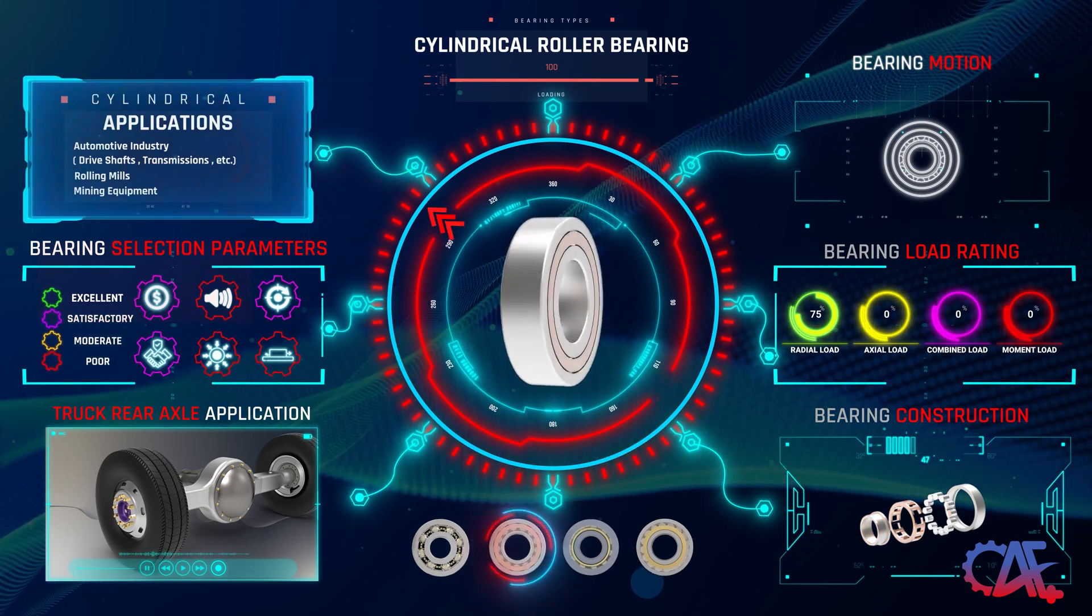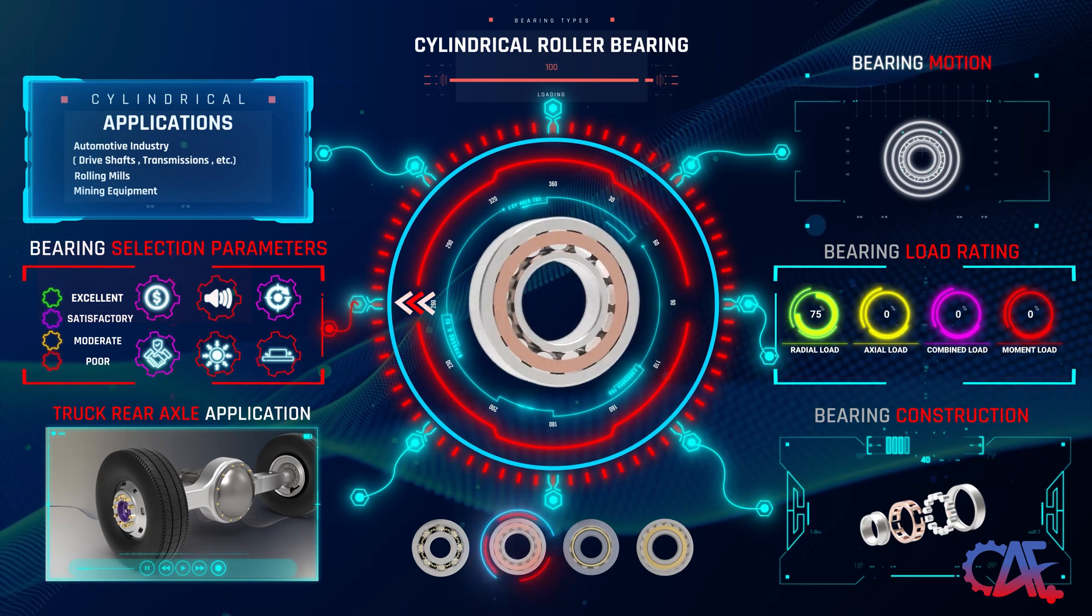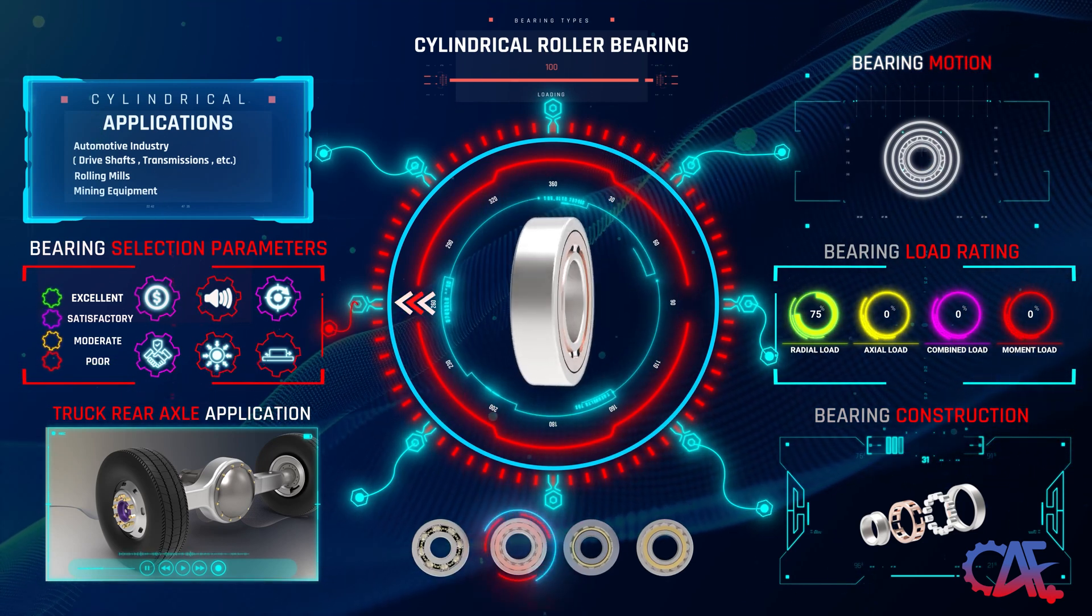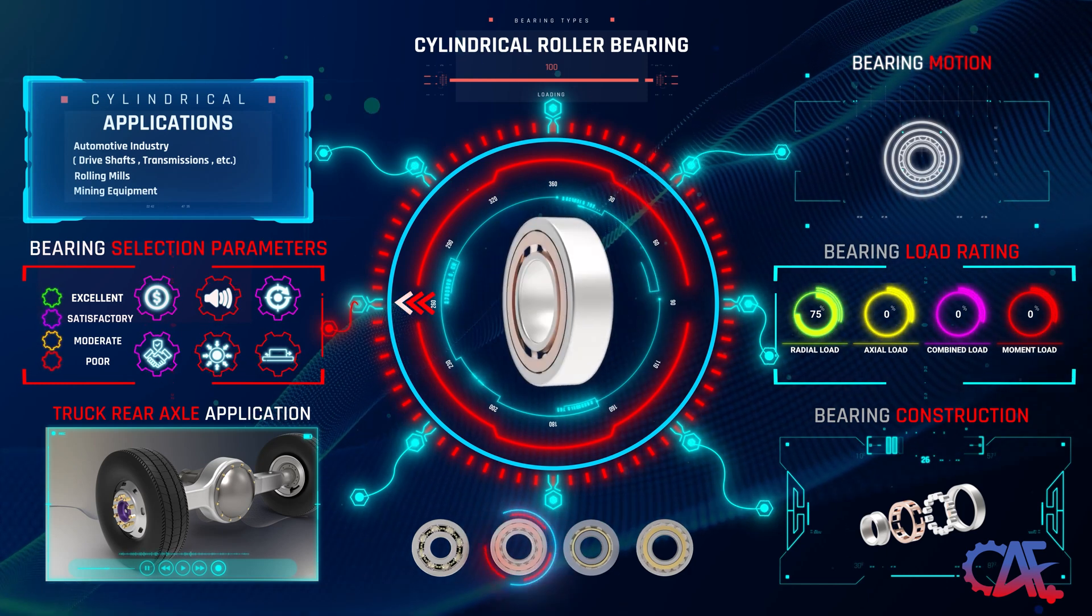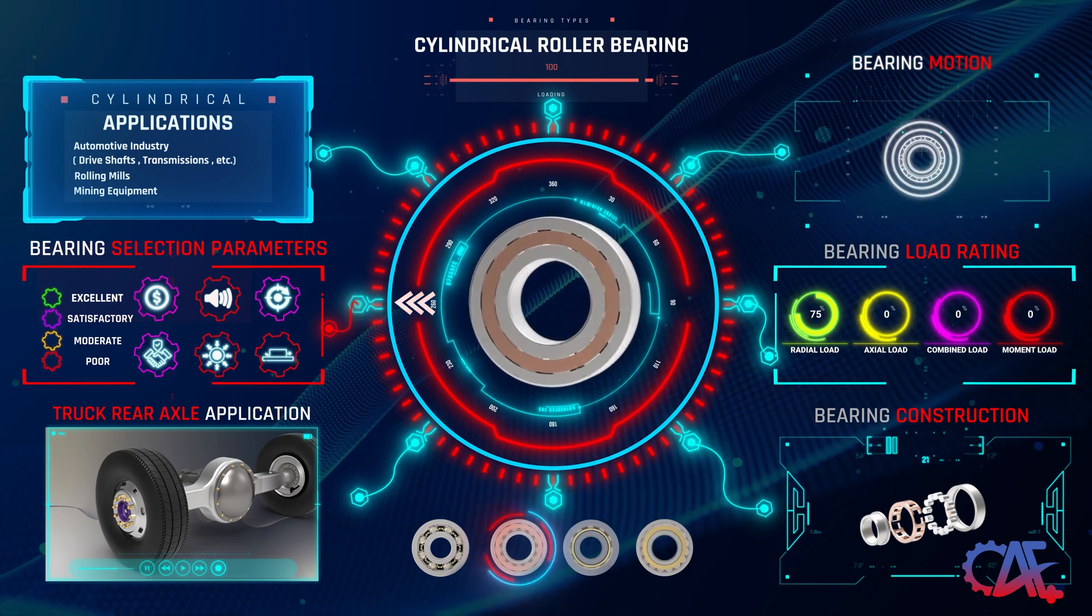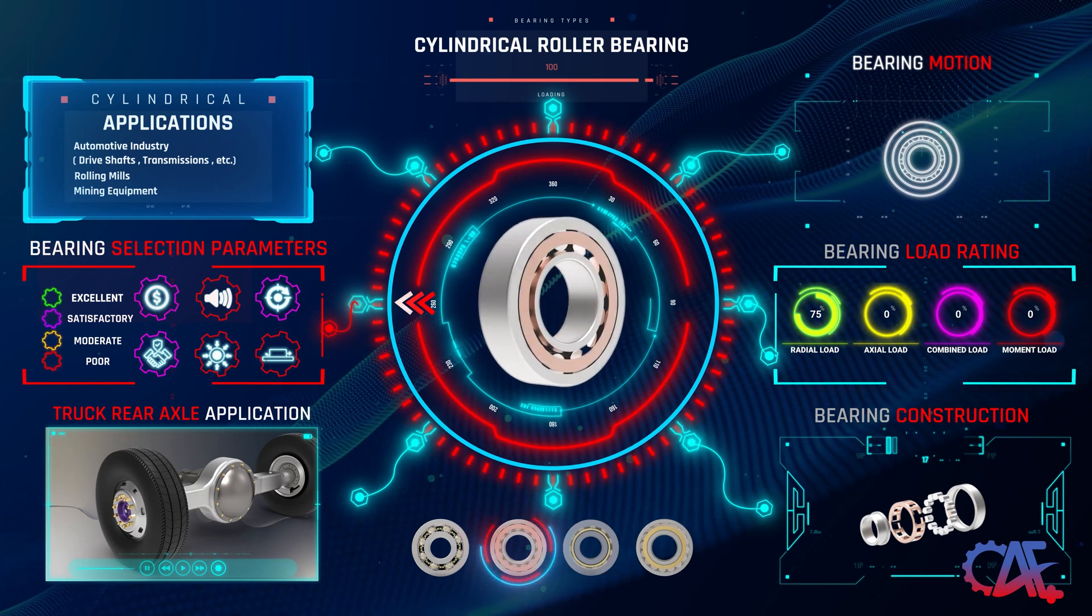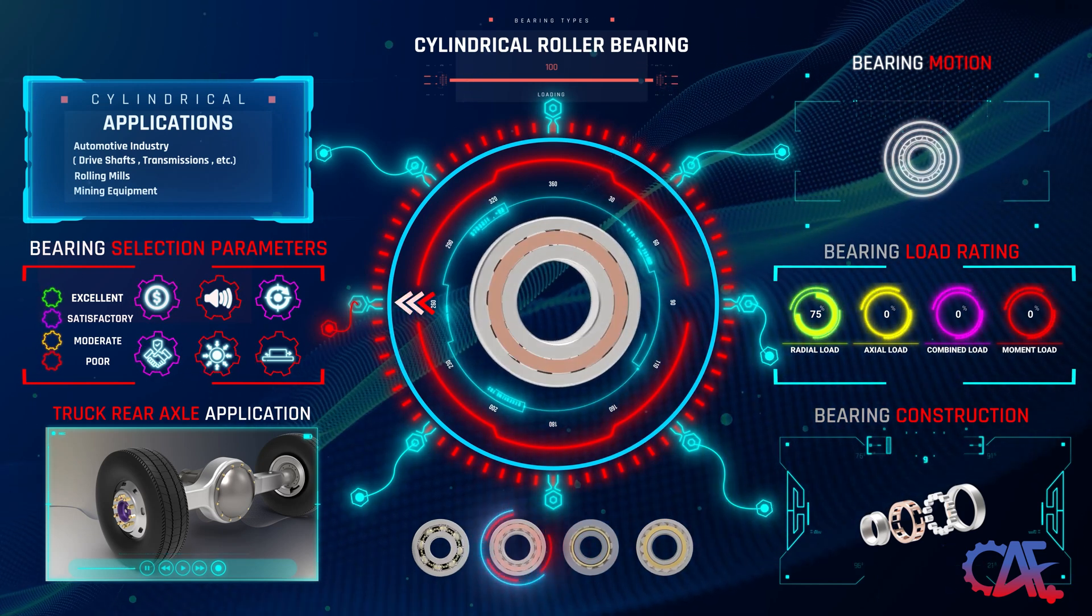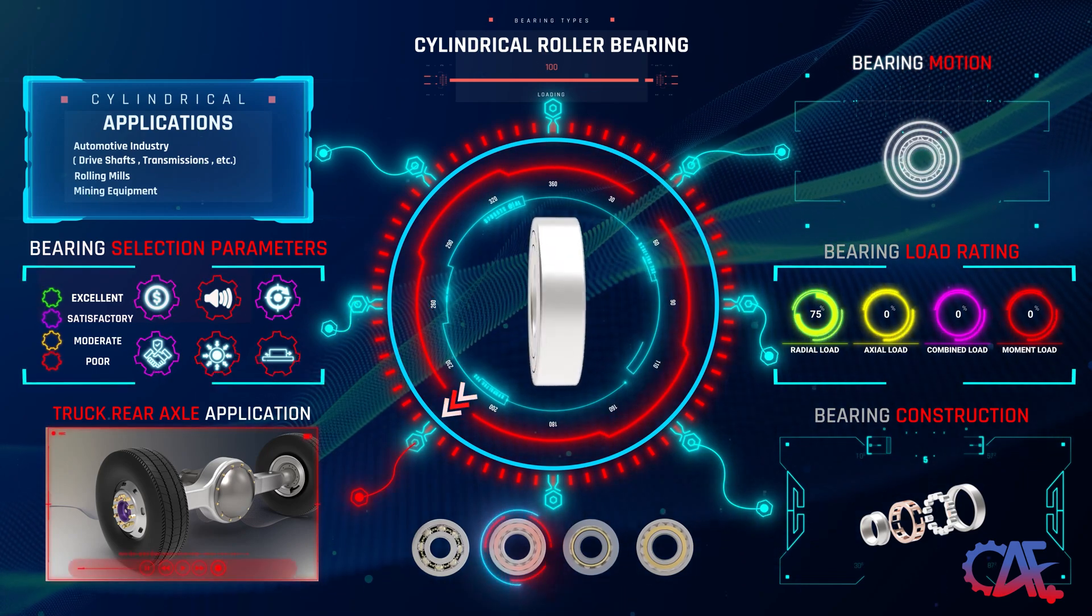When evaluating bearing selection parameters, these bearings stand out for their cost efficiency, durability, and rotational accuracy. However, they rank poorly in terms of noise level and friction torque, and are unsuitable for applications where space is limited. Now, let's examine how a cylindrical bearing functions inside a truck's rear axle drive.